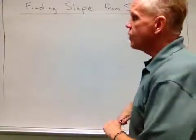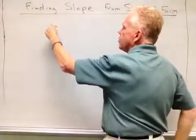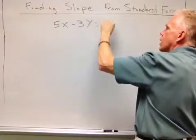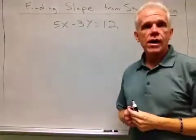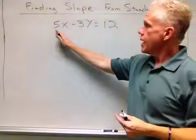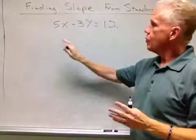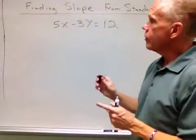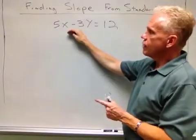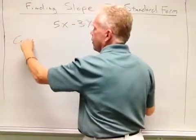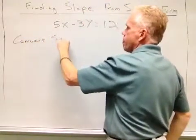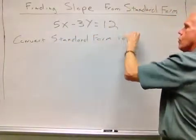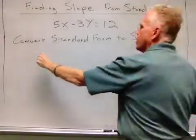Remember, an example of standard form would be something like 5x minus 3y equals 12. This is standard form: ax plus by equals c. We're trying to find the slope of this line without actually having to graph it. So what we're going to do is convert the standard form to slope-intercept form.